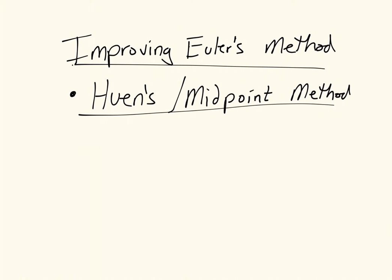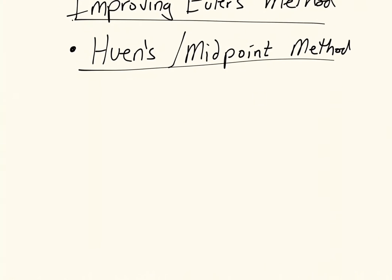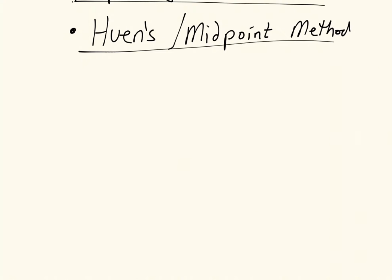Thus far, numerical solutions to ordinary differential equations have been done using Euler's method. In this video, I'm going to present an alternative method, which is known as Huen's method, or the midpoint method, which is an improvement to Euler's method. To see how this works, let's start by recapping how Euler's method works, and then we'll see how we can improve upon that.